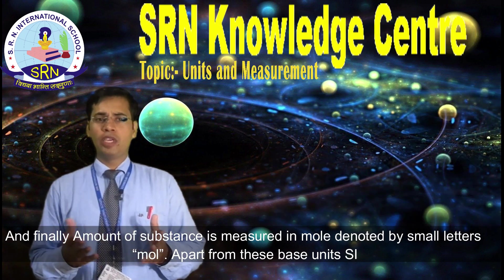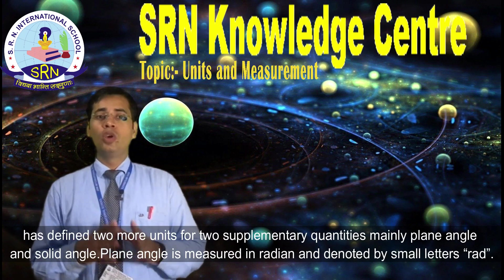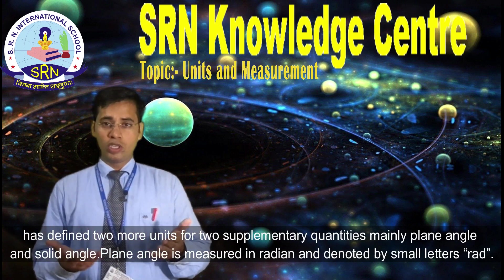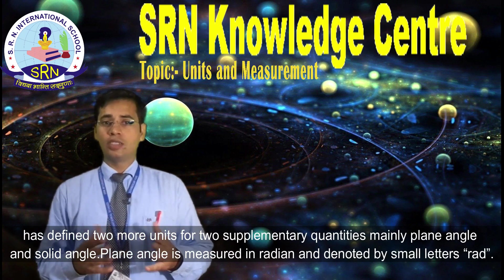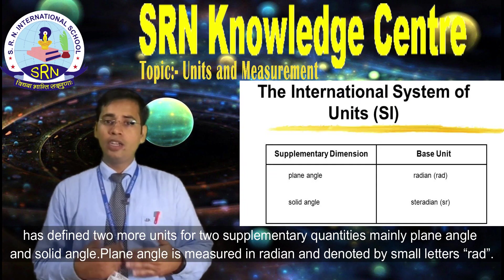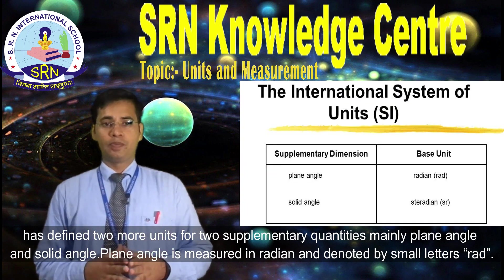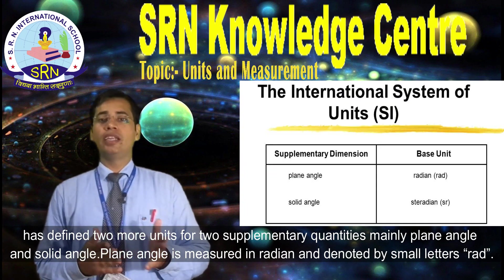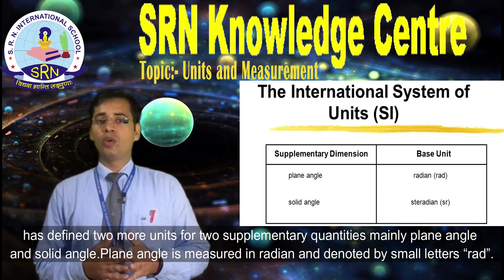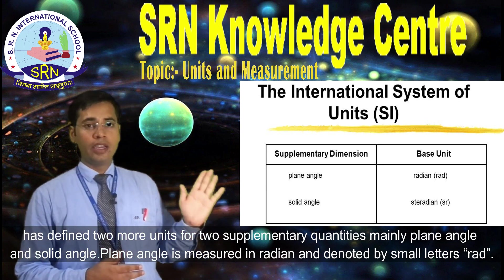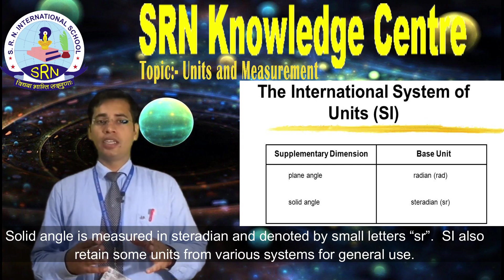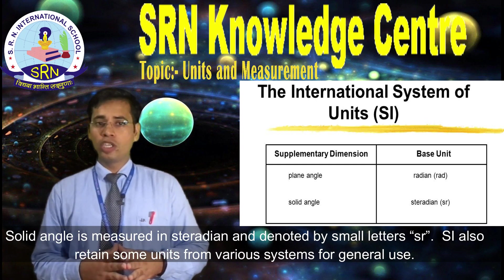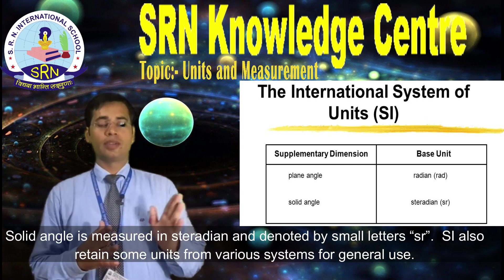Apart from these base units, SI has defined two more units for two supplementary quantities, mainly plane angle and solid angle. Plane angle is measured in radian, denoted by the small letters rad. Solid angle is measured in steradian, denoted by small letters sr.